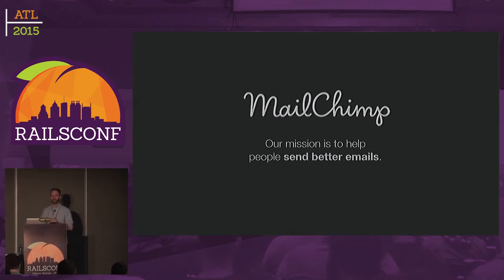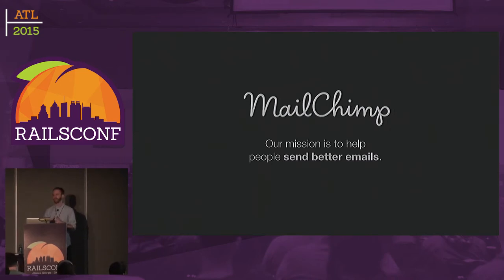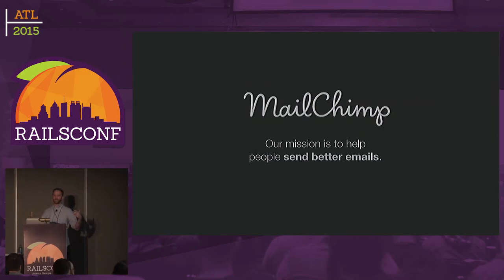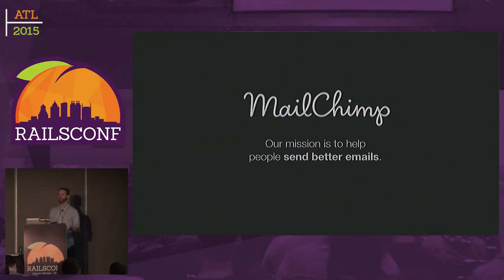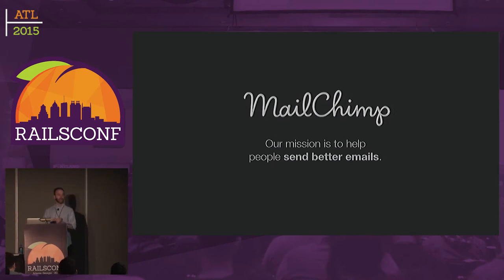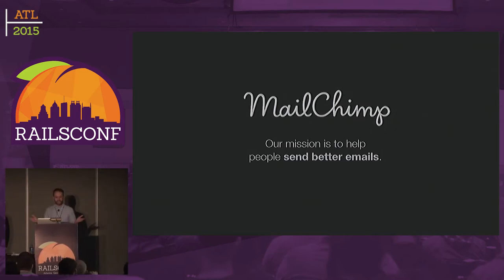MailChimp is an email service provider. Our mission is to help people send better emails. One of our co-founders, about eight or nine years ago, was at a fork in the road and had to choose: do I hire a developer to build an API for this new email service company, or do I hire a salesperson? Fortunately, he decided to hire a developer. Currently MailChimp has zero salespeople, so it seems like a good decision.